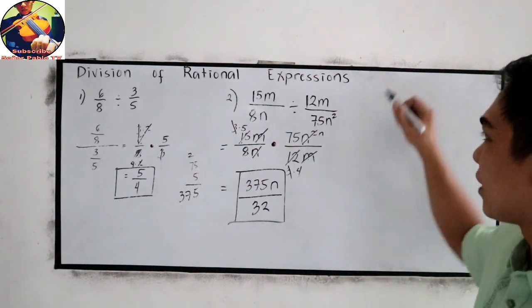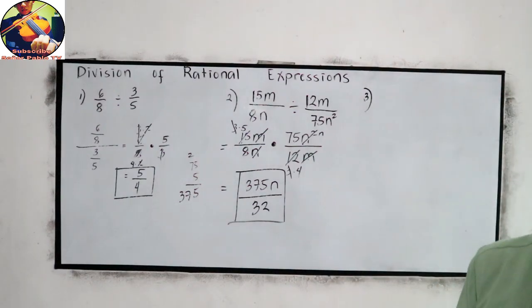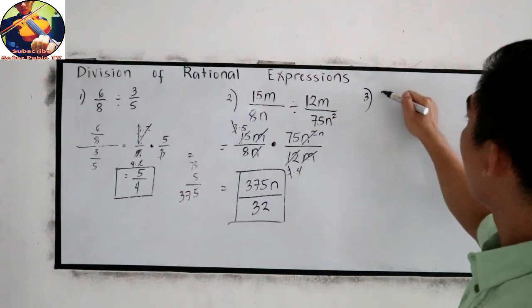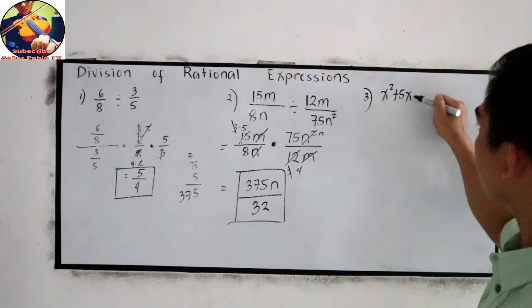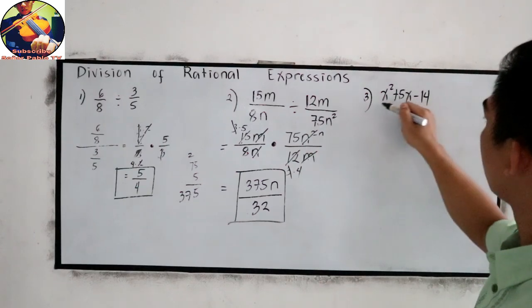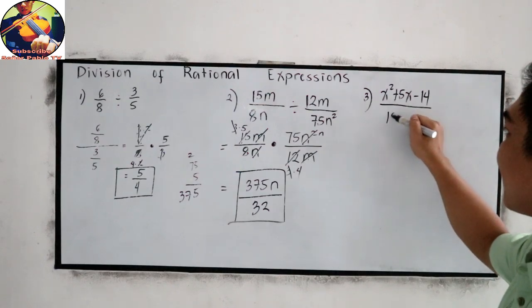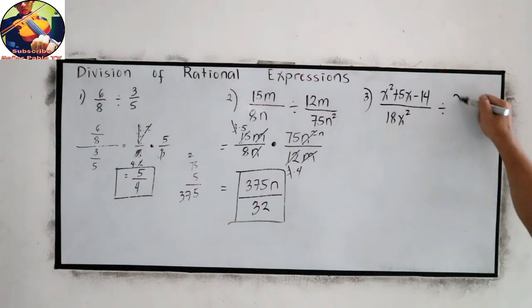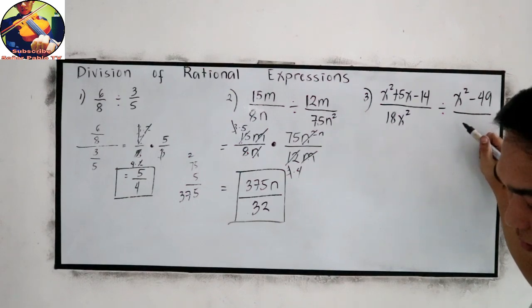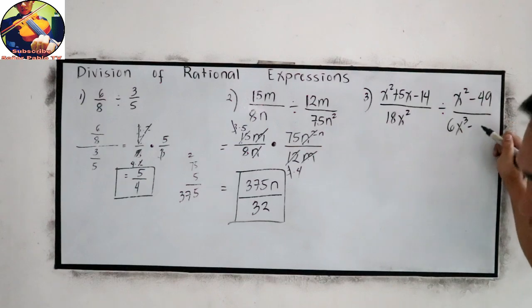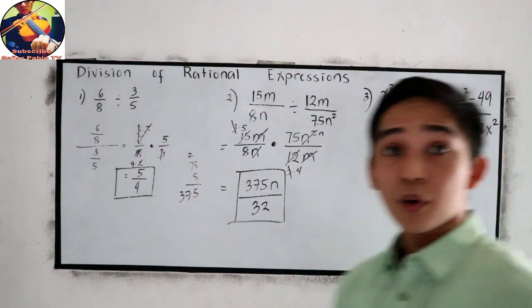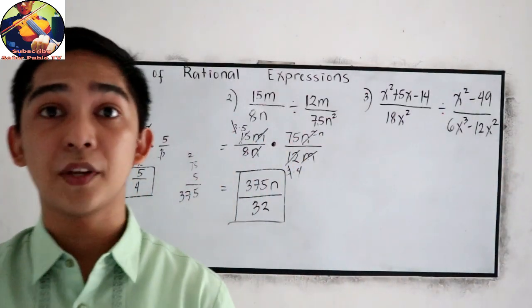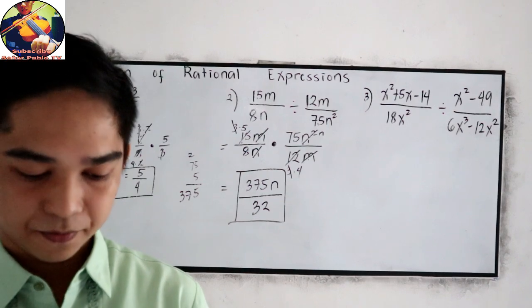How about this one? Number 3: x squared plus 5x minus 14 all over 18x squared, divided by x squared minus 49 all over 6x cubed minus 12x squared. If you want to answer number 3, you can pause the video, then after answering resume watching.